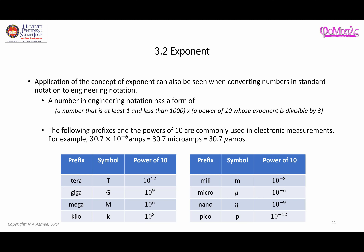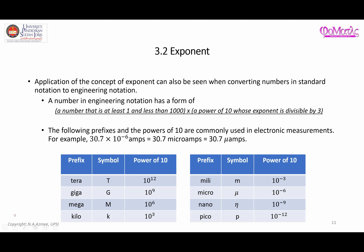In this video I'm going to give another example related to the use of exponents in converting numbers from standard form or standard notation to engineering notation. A number in engineering notation has two components. The first component is a number that is at least one and less than 1000.